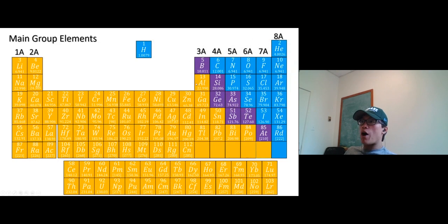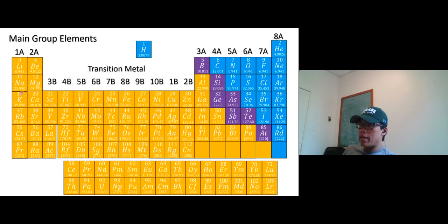All right, now main group elements. This is how you navigate it. If I say group one, group two, so group one, group two, three, four, five, six, seven, eight—there are eight groups total. In your textbook, they're going to do group one, group two, and then 13, 14, 15, 16, 17, 18. That's fine because they count right here: one, two, three, four, five, six, seven, eight, nine, ten, 11, 12, 13, 14, 15, 16, 17, 18.